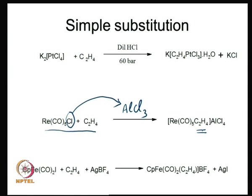Another example is the generation of a vacant coordination site using a silver salt, by using the principle that silver(I) ion is halophilic — it reacts very readily with any halide ion in the coordination sphere of a metal. Here an iron complex with an iodide ligand has the iodide removed by silver, forming silver iodide which is removed, leaving a vacant coordination sphere on iron that leads to the formation of an olefin complex. In all these examples, there is an assisted removal of a ligand from the coordination sphere of a metal complex, and that vacant coordination sphere is occupied by an olefin.